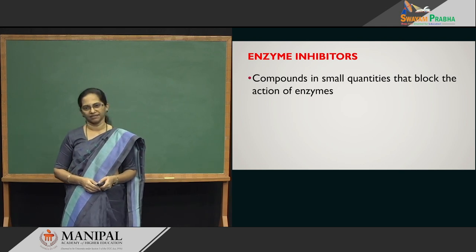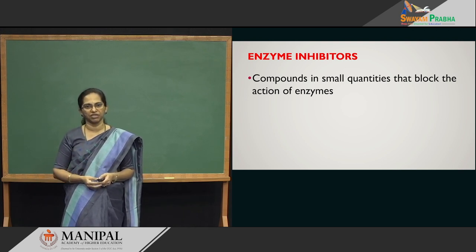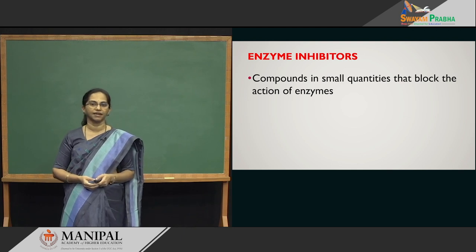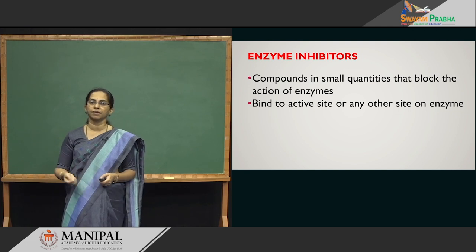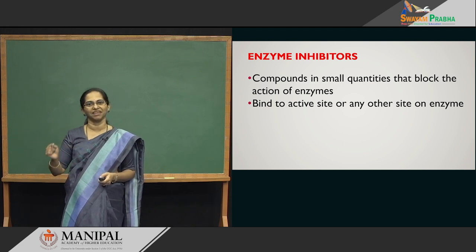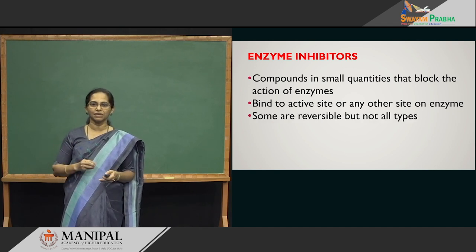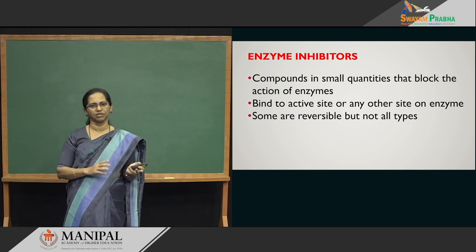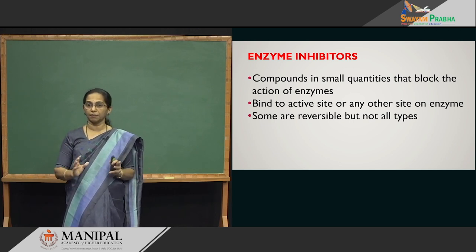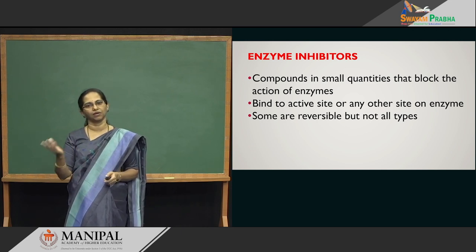Enzyme inhibitors are compounds which, when present even in small traces, can damage enzyme activity — they block enzyme action. An inhibitor can bind to the active site of the enzyme or to some other place, but it will block the action of the enzyme. There are two types: reversible or irreversible. Reversible — you remove the inhibitor, the enzyme is fine. Irreversible — the enzyme is totally destroyed.